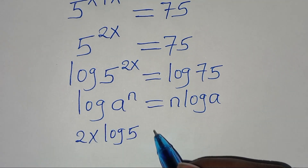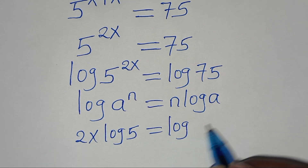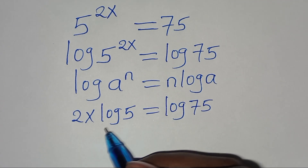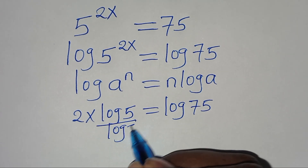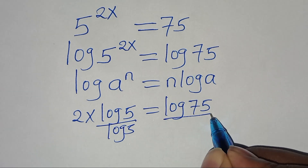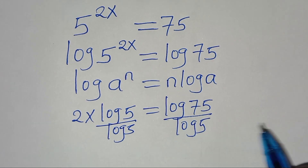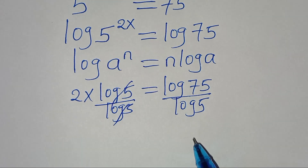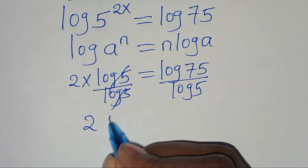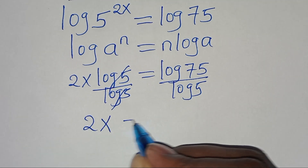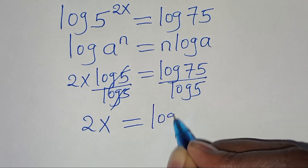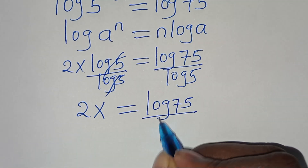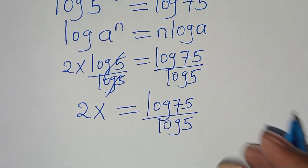We divide both sides by log 5. Simplifying log 5 divided by log 5, we now have 2x equal to log 75 divided by log 5.